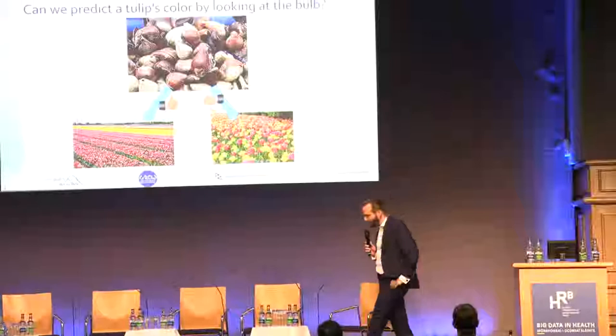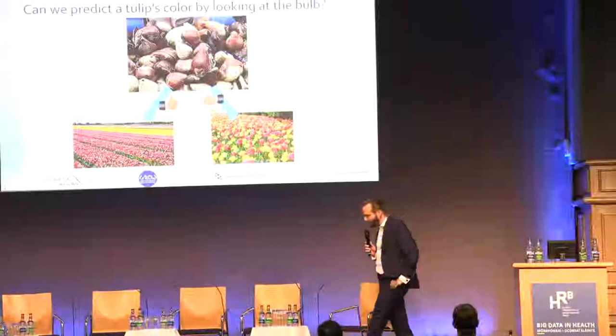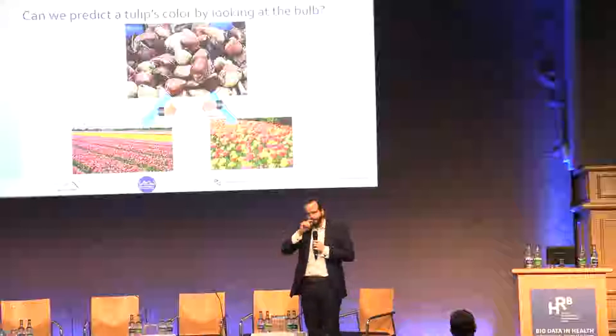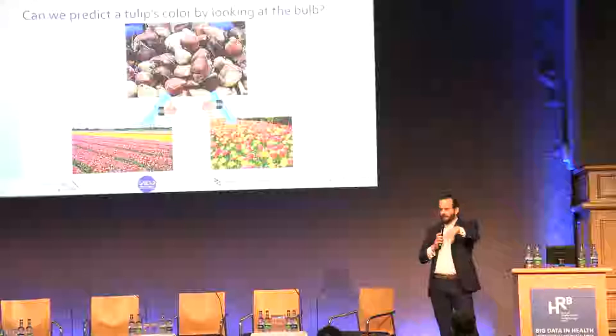Suppose you are a tulip farmer in Holland and you've bought two types of tulips — pink and yellow. You have those two crates, but you hire a student to help in the summer, and the student drops both crates. Now your tulip bulbs are scattered across your farm.